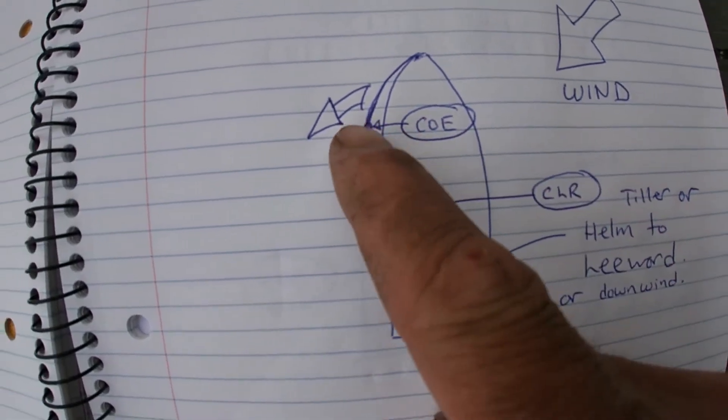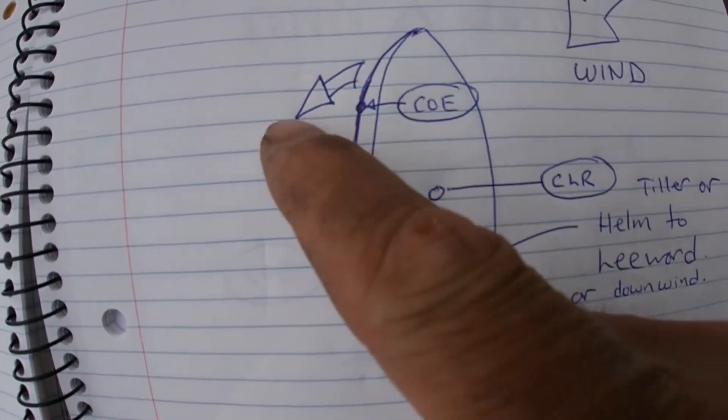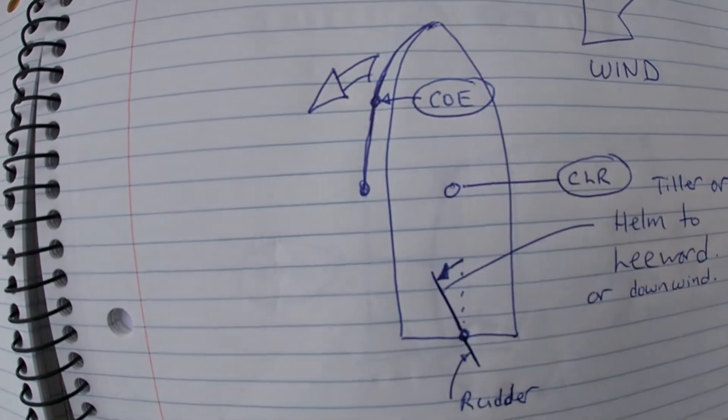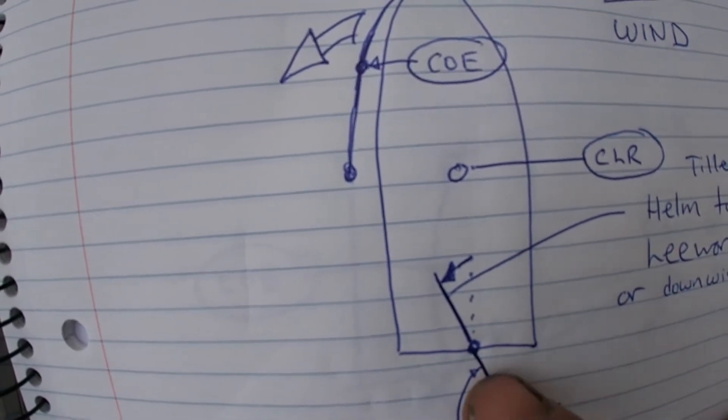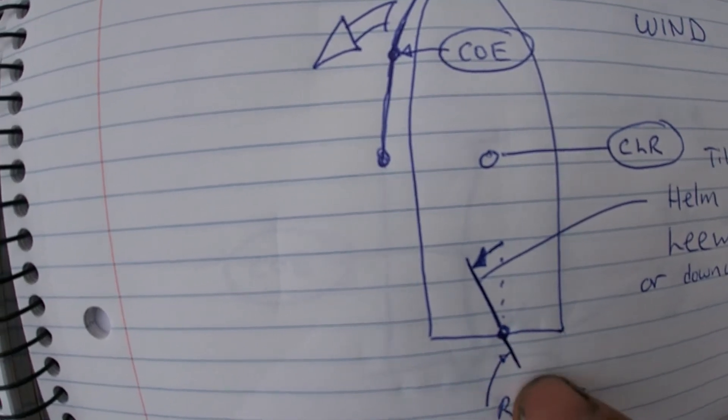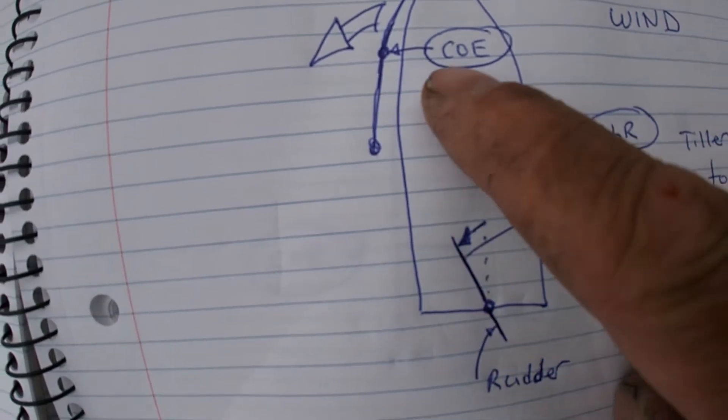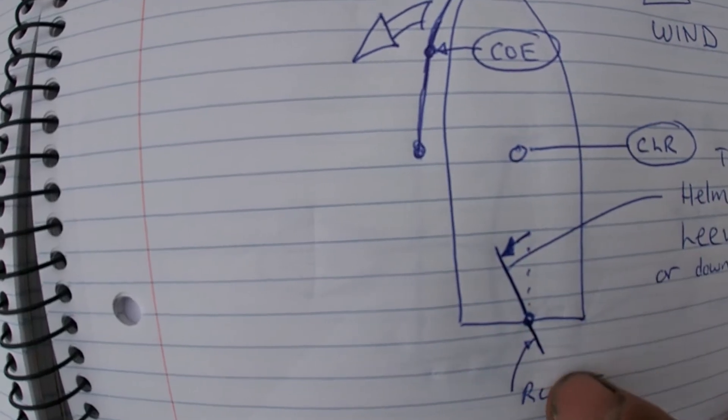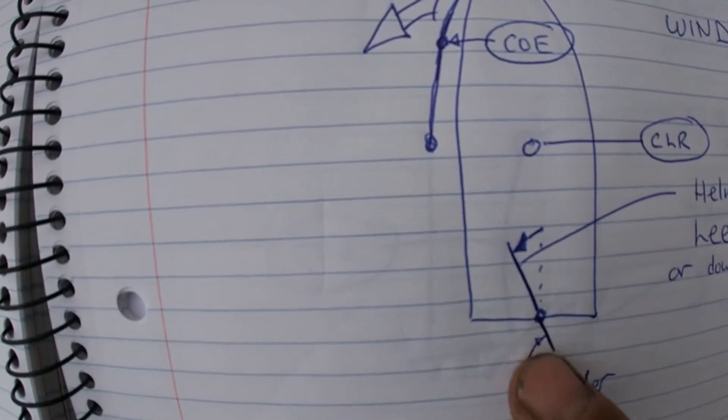And so what happens when we're sailing close hauled with the jib only is the tendency is for the boat to want to move to leeward or downwind. So to counteract that, we've got to move the tiller also to leeward to counteract the boat's tendency to want to go downwind.